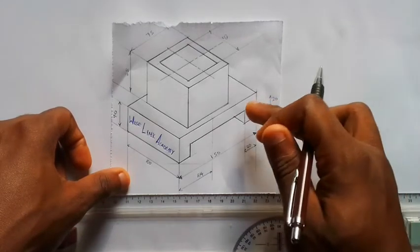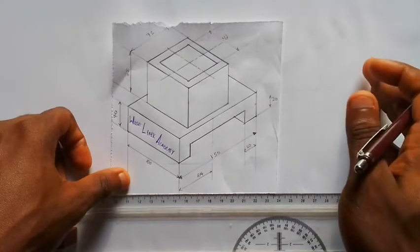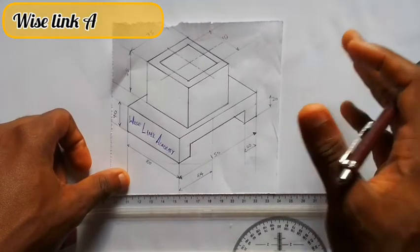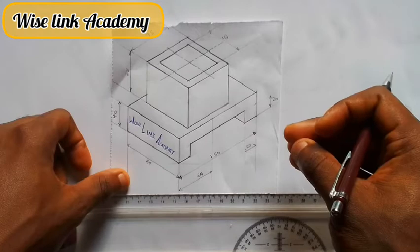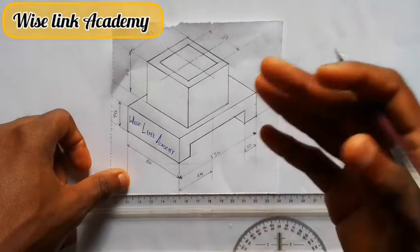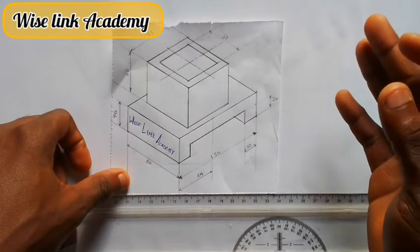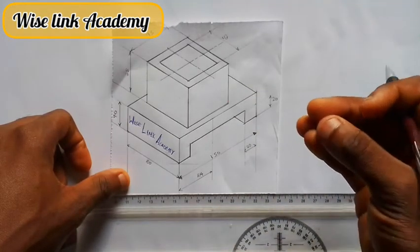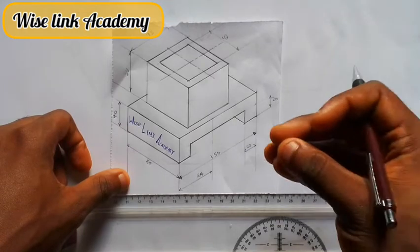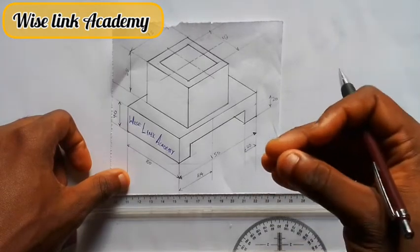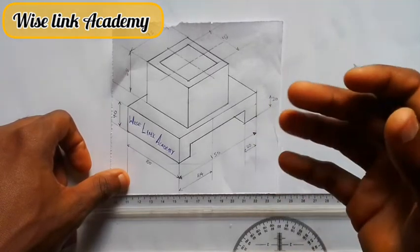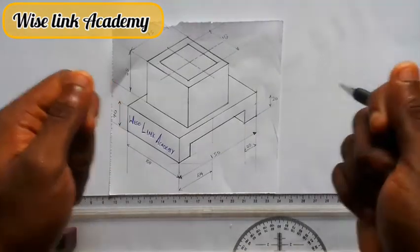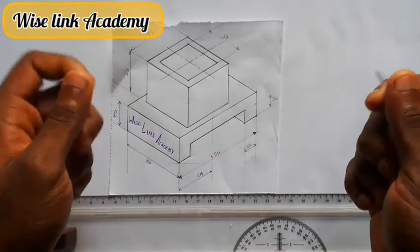For every isometric, my first task is to draw a horizontal line and an inclined 30-degree line. Every isometric is produced from a 30-degree inclined line. So let's do that.